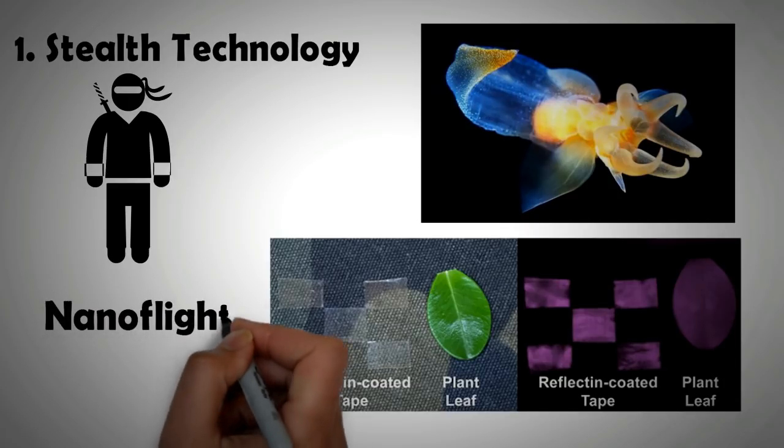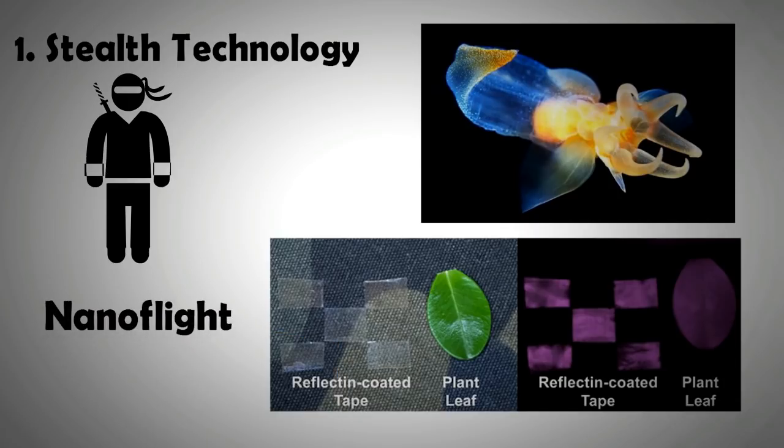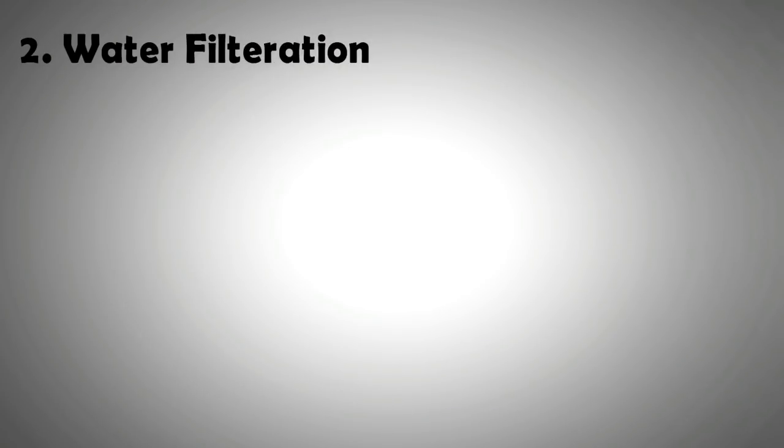Nanoflight, an Israeli company, is already claiming to have a coating that will make objects nearly impossible to detect. Work on stealth technology using nano material is also underway in Germany, USA, and India.